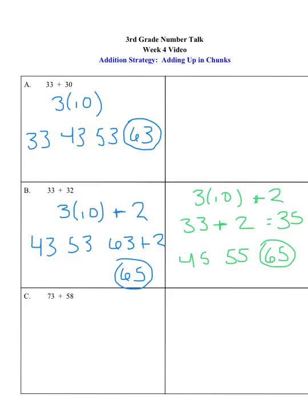Either way, it gets them to the same final answer. For C, 73 plus 58, there's a couple different ways we can do this. Some of us look at 73 plus 58 and we automatically know that's 131, which is fantastic. But if we're using the adding up and chunk strategy, we have a choice.